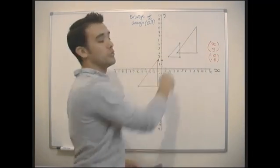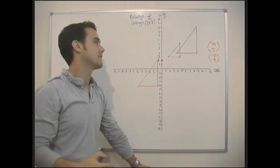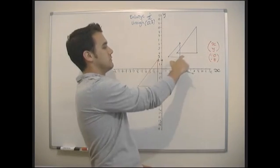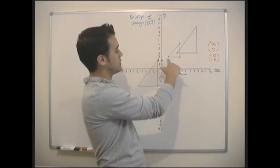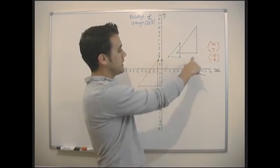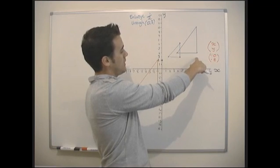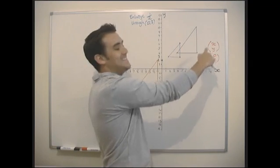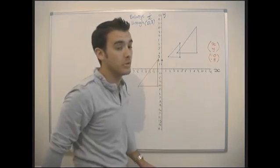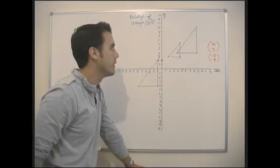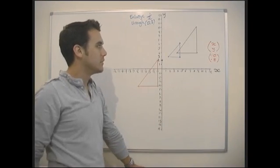So this is our enlargement by scale factor a half. You take the distance all the points are away from the centre and multiply by the scale factor. If it was two, and a point was nine away, you'd suddenly have to go 18 away — you can see it would be too big for this graph.